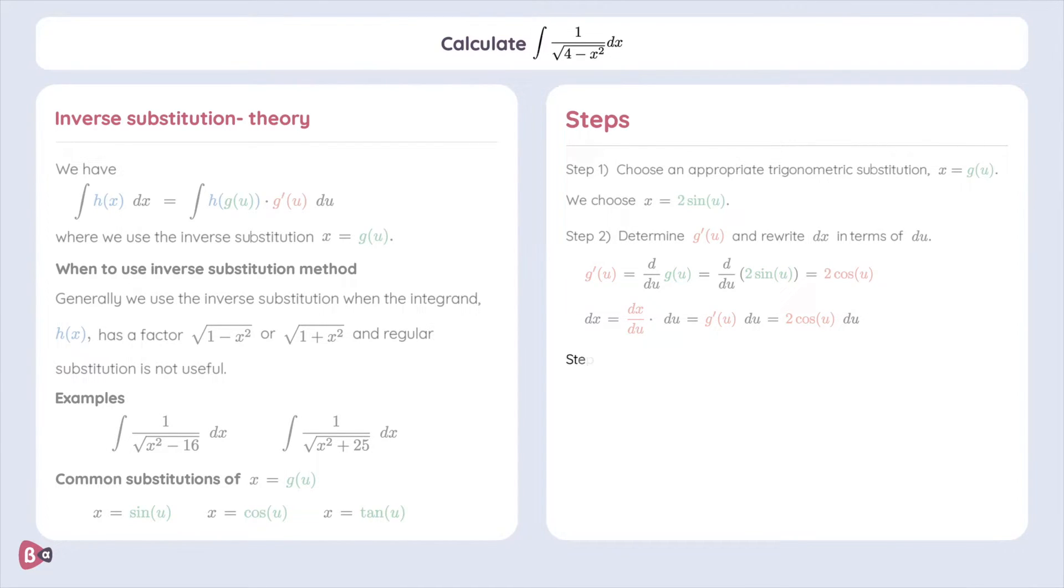The next step is to start with the formula we saw at the beginning. This is our integral of h of x dx. It's equal to the integral of h of g of u times g prime of u du. We know that in our case, h of x is equal to 1 over square root of 4 minus x squared. We also know that g of u is 2 times sine of u, giving us 1 divided by square root of 4 minus 2 times sine of u squared.